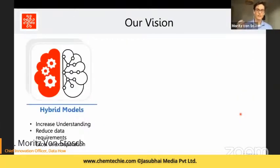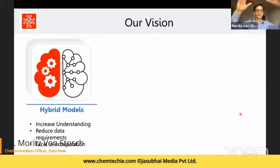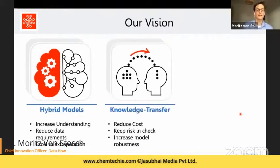At DataHow we believe hybrid models are the key to digital twins in bioprocess development, and that they will change the way we develop processes now and in the future. Hybrid models increase process understanding, reduce the amount of data required, reduce the number and effort of experiments, and help us excel at extrapolation — going beyond what we have already investigated to suggest new optimal conditions outside our experimental range. They also help transfer knowledge from one product and scale to the next, reducing costs and keeping risks in check.